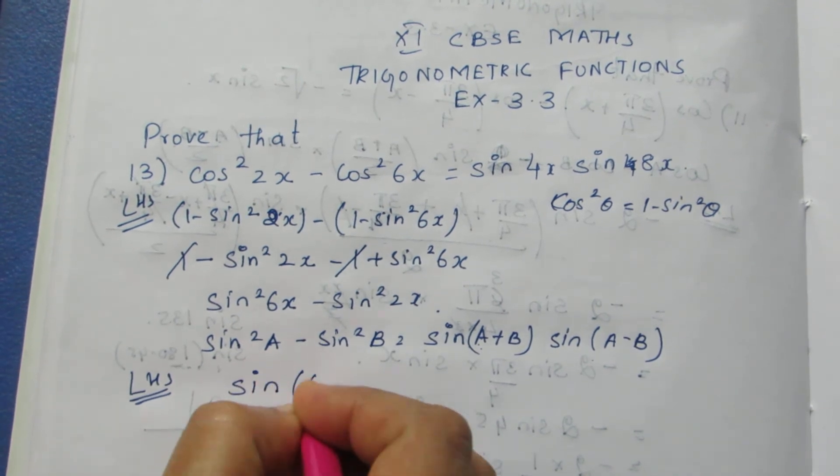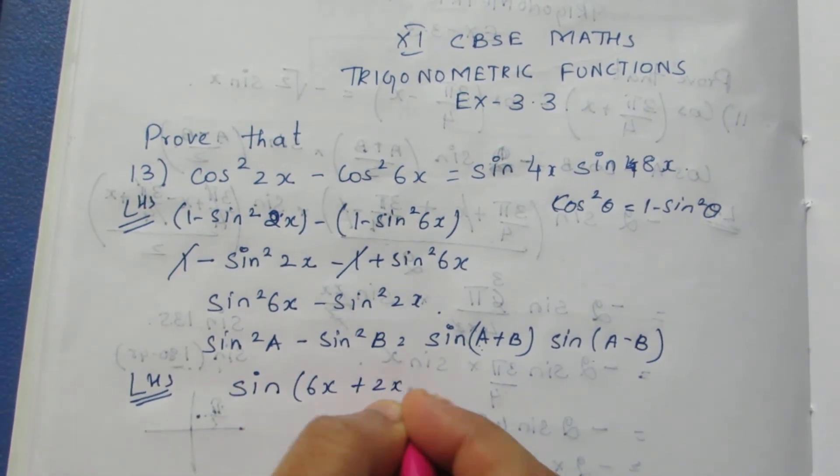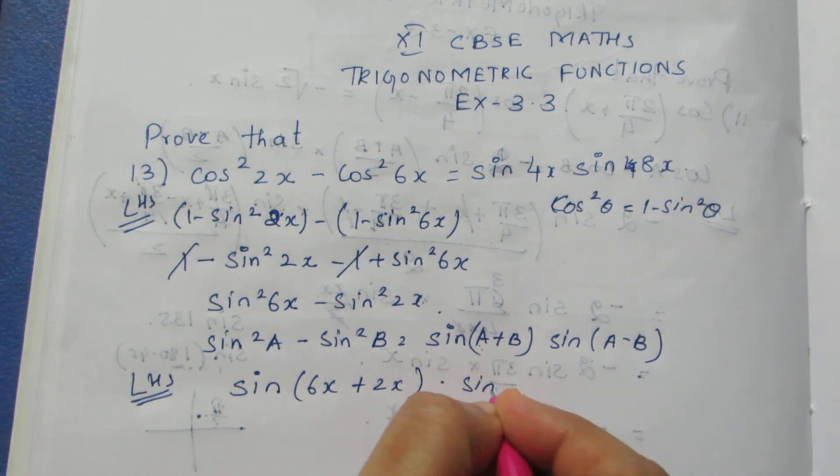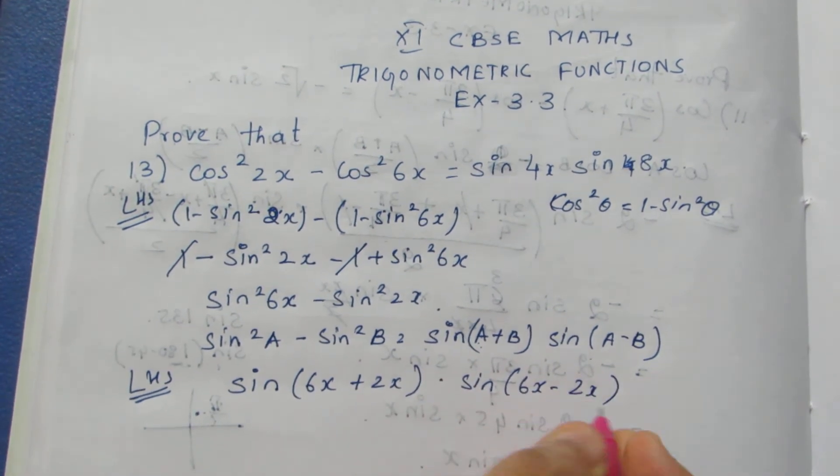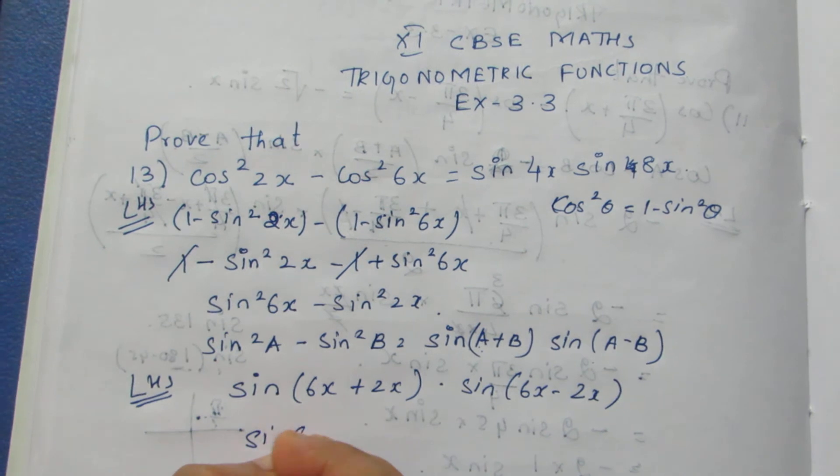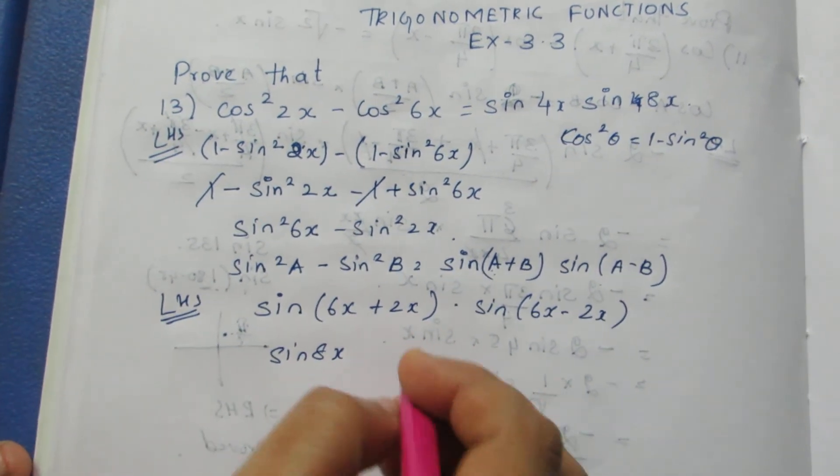So here it becomes sin(6x + 2x)·sin(6x - 2x).